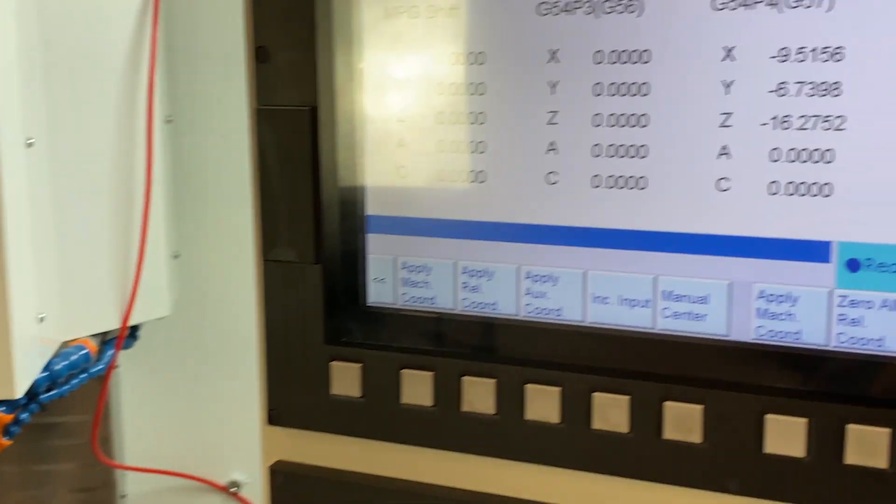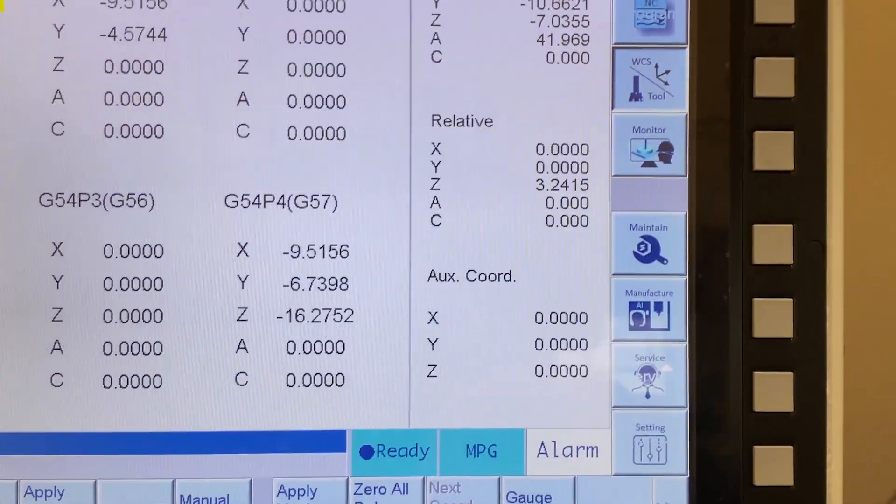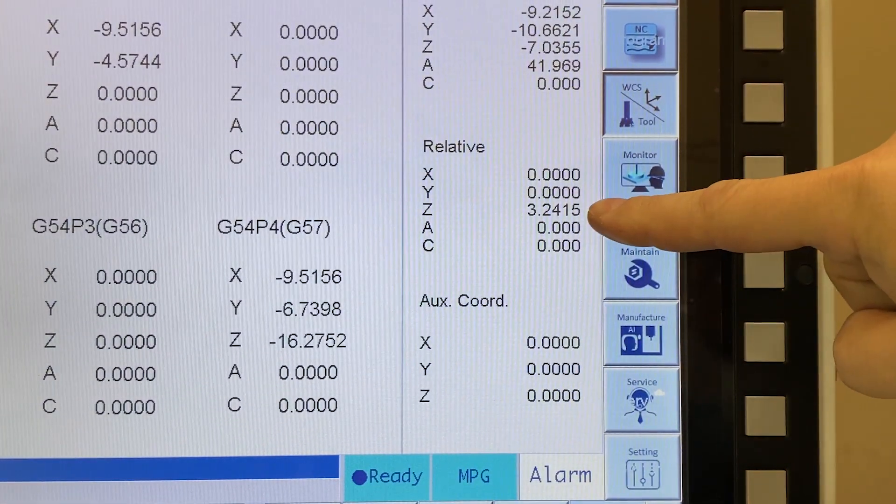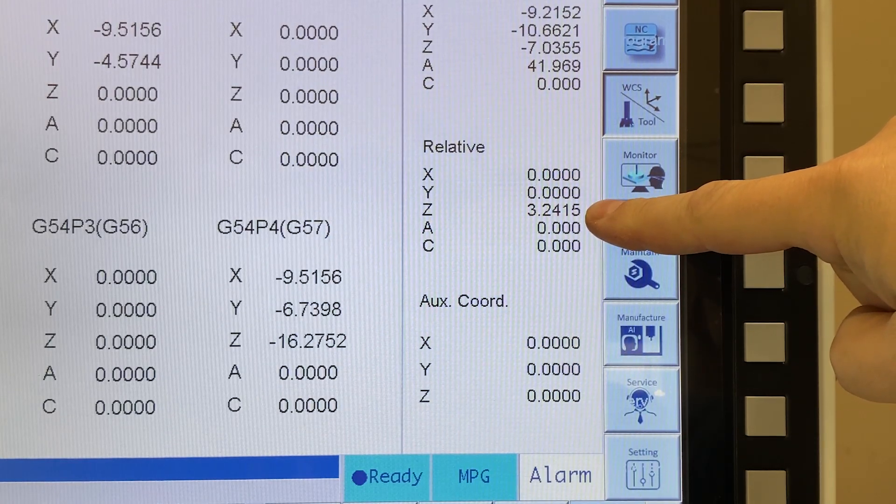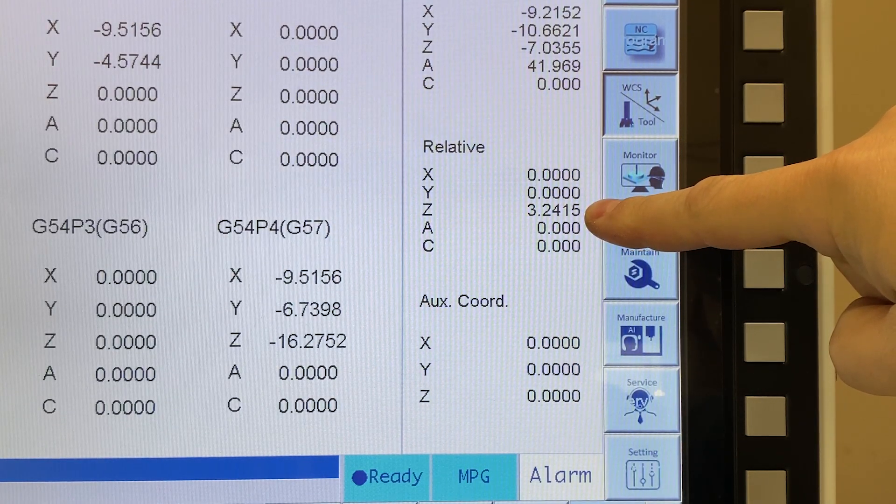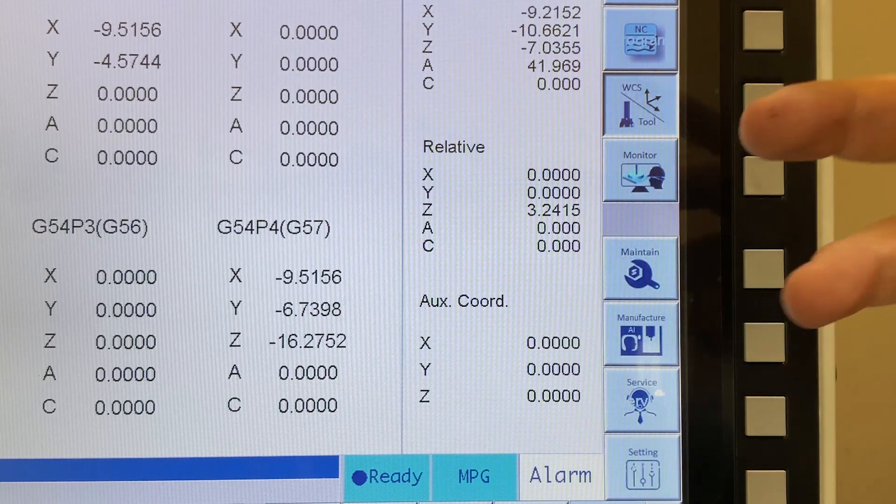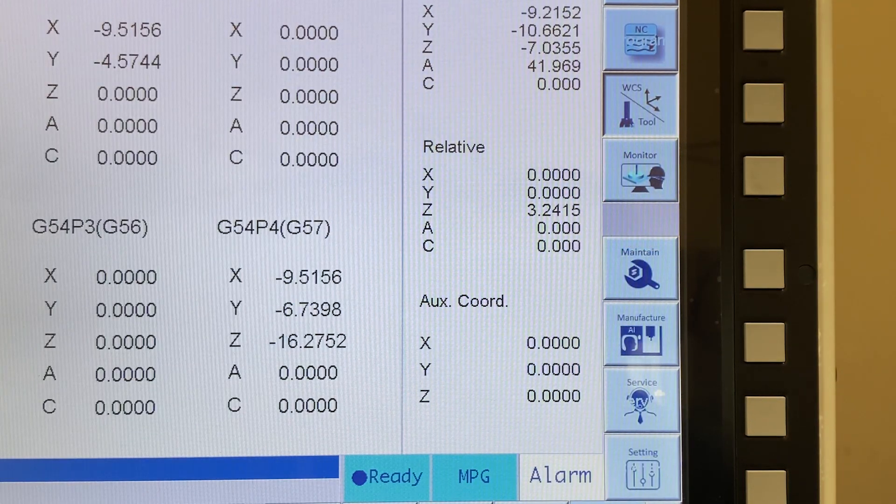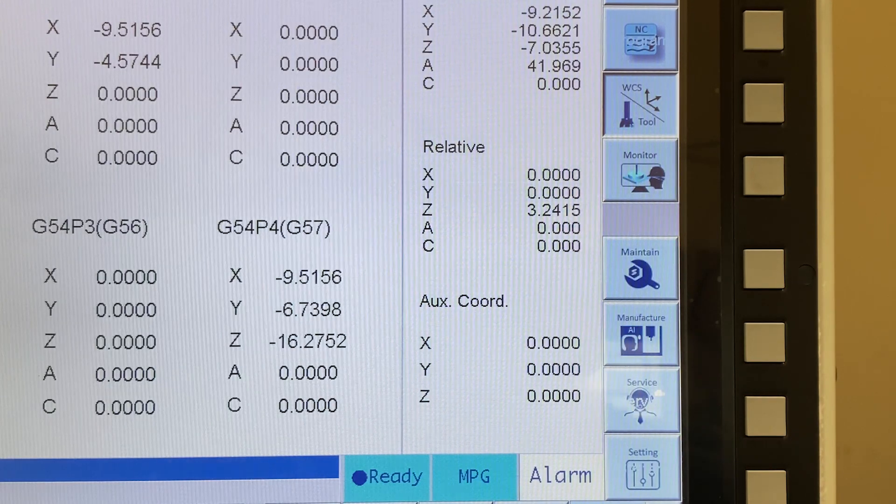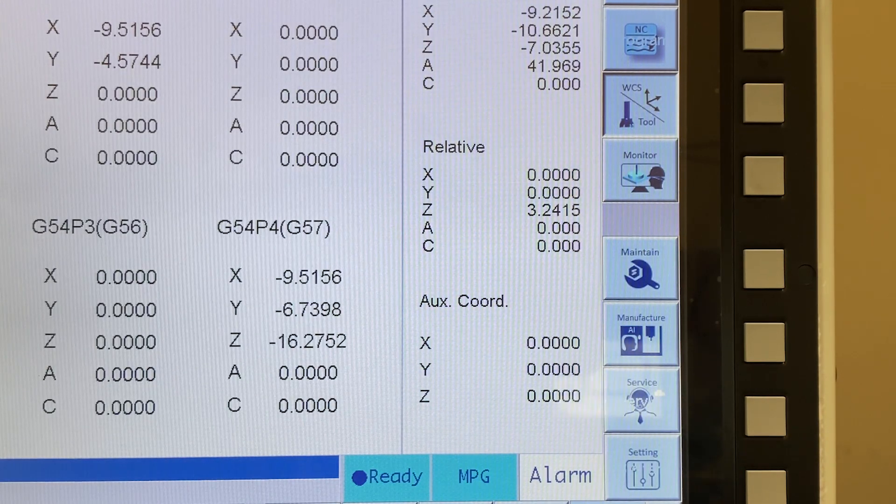So we go back to our relative coordinate system and you can see that we've got 3.2415. Obviously we'll add the three inches to the length of the Hymer, and now we have an accurate length for the Hymer.